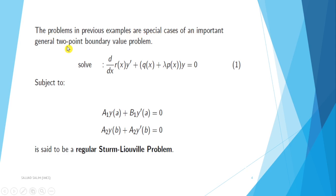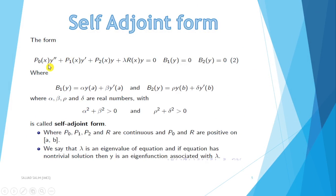The problems in previous examples are special cases of an important general two-point boundary value problem. We solve the equation: [r(x) y prime] prime plus q(x) y plus lambda p(x) y equals 0, subject to boundary conditions: a1 y(a) plus b1 y prime(a) equals 0 and a2 y(b) plus b2 y prime(b) equals 0. This is said to be a regular Sturm-Liouville problem. The self-adjoint form is: p0(x) y double prime plus p1(x) y prime plus p2(x) y plus lambda r(x) y equals 0, with B1(y) equals 0 and B2(y) equals 0.